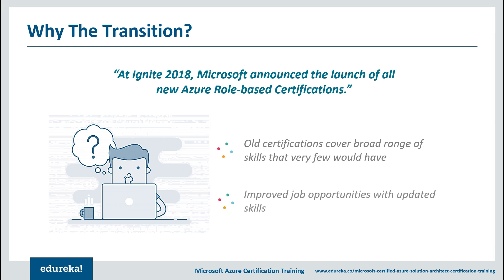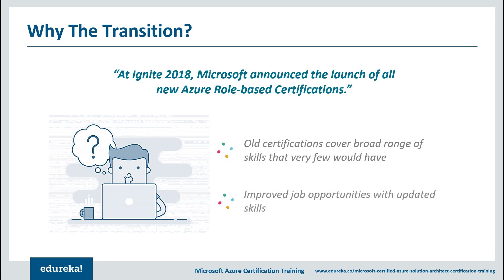These new role-based certifications are split into three levels of designation. First is the fundamental level, requiring you to pass one exam. Next is the associate level, requiring two exams. Finally, the expert level — you need to pass two expert-level exams if you have no associate certification prerequisite, or one expert-level exam if you already hold an associate-level certification. In this session, we will focus on the expert-level exam: Microsoft Certified Azure Solution Architect.